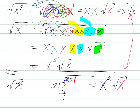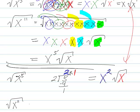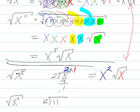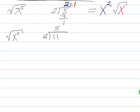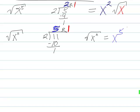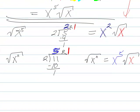We can do the same thing for x to the 11th. I've got 11 and I need to pair them off. 2 goes into 11 five times — 10, remainder 1. So 5 remainder 1, meaning I've got 5 pairs and 1 left over. That's the same answer we got before: x to the fifth, square root of x.